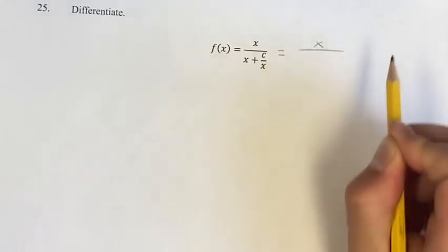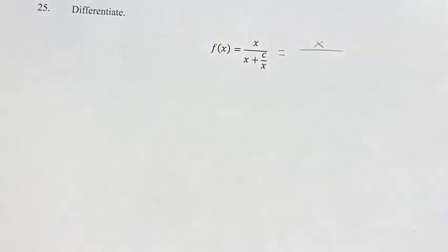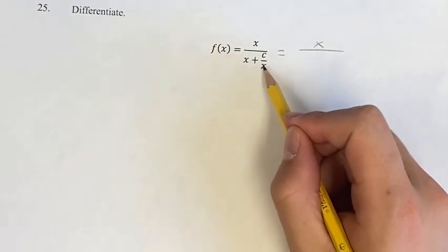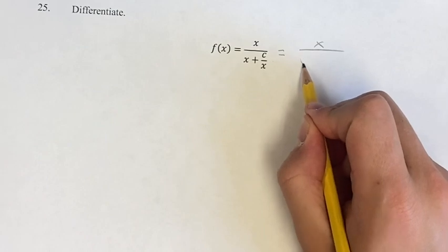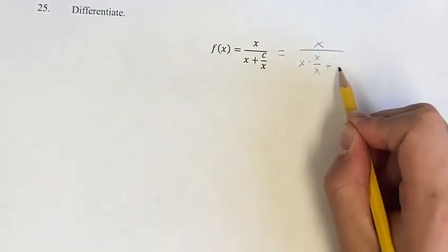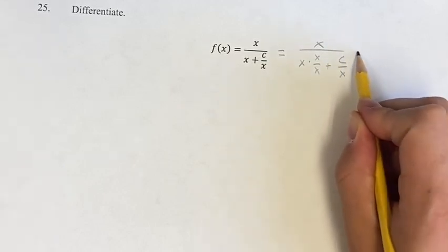So this is x over, and if we want to simplify this, we want to get it into a common denominator, because then we can get it under one fraction. So x, if we want to get it over x, we have to multiply x times x over x. This is multiplying it by 1, so it doesn't change its value. Plus c over x.